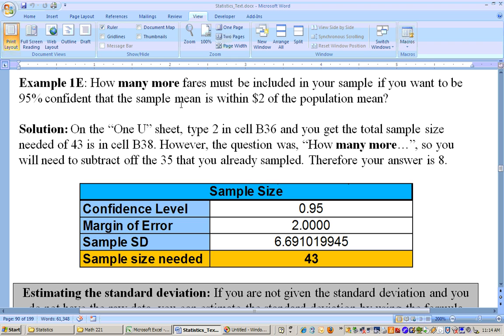This problem right here says, how many more fares must be included in your sample if you want to be 95% confident that your sample mean is within $2 of the population mean. This is referring to those air flights.